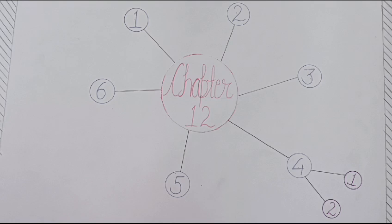All the energy required for life processes is obtained by oxidation of food. Plants are autotrophic. They can make their own food by the process of photosynthesis.